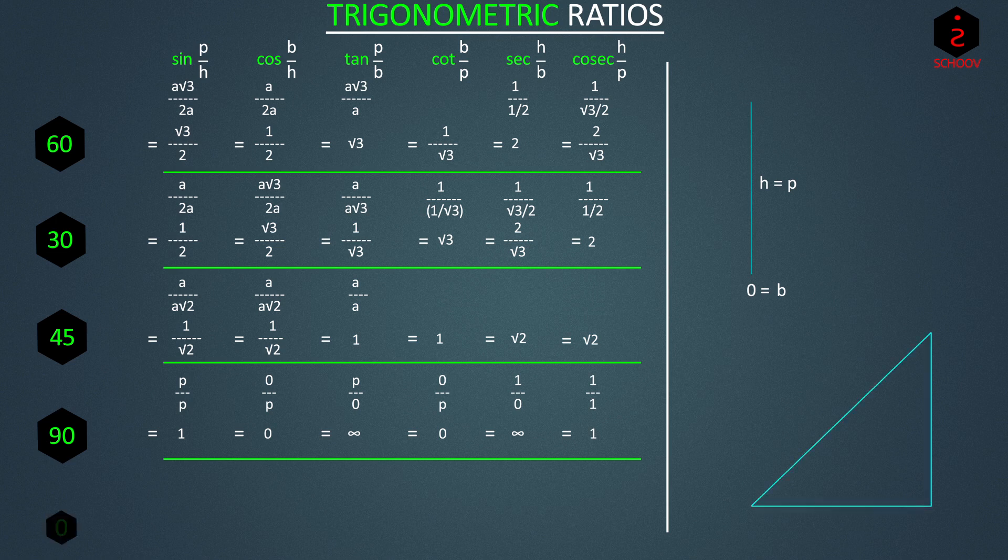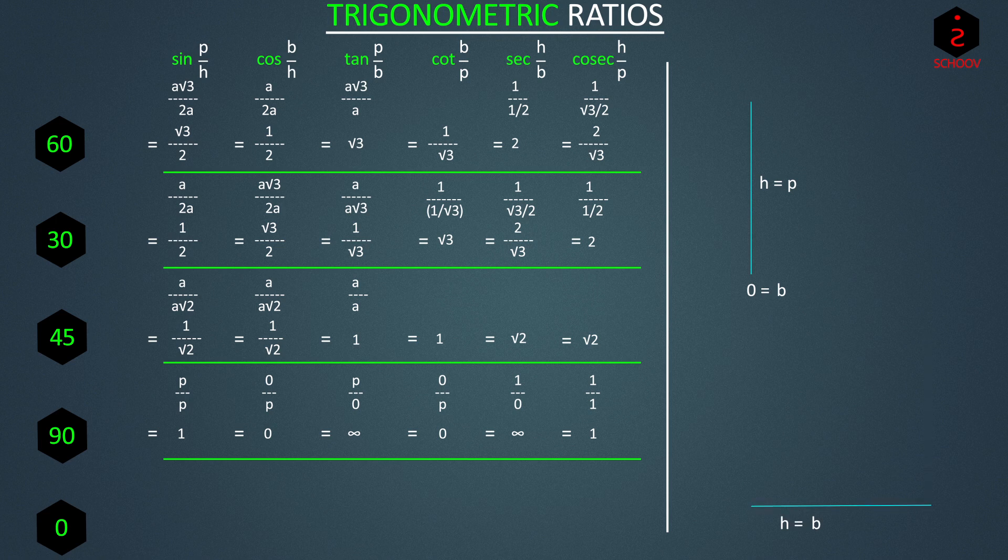So next is 0 degrees. If theta is 0, it means that hypotenuse becomes base B, and the triangle becomes a horizontal line, which means that length of perpendicular becomes 0. So sin 0 is perpendicular by hypotenuse, that is 0 by B, 0. Cos 0, base by hypotenuse, that is B by B, 1. And tan 0 is perpendicular by base, that is 0 by B, 0.